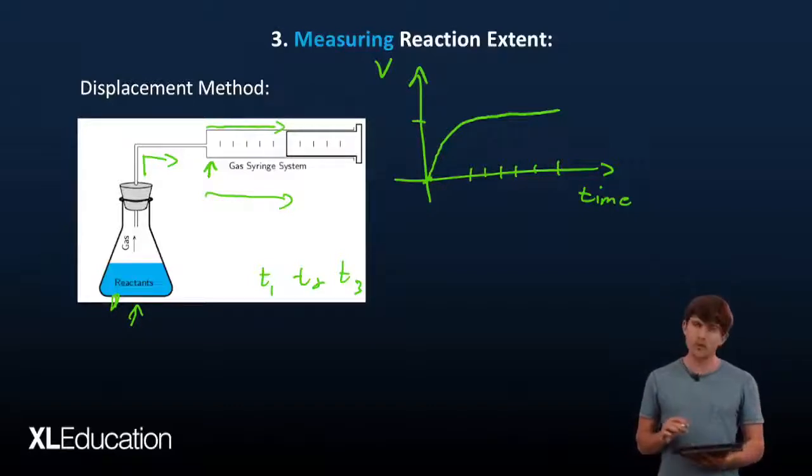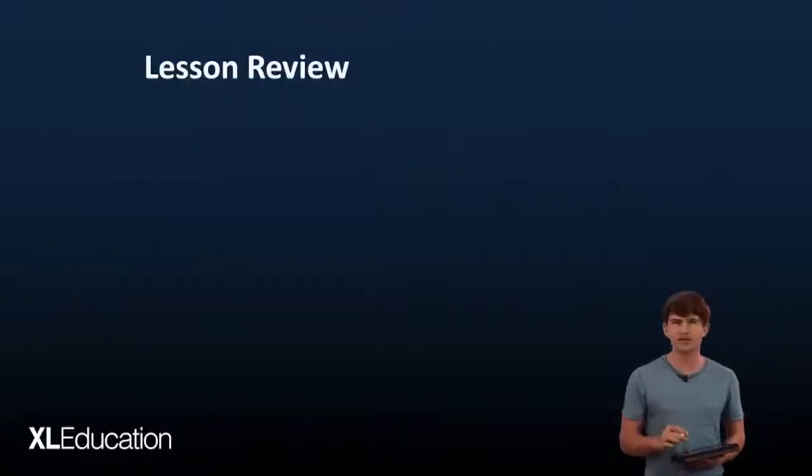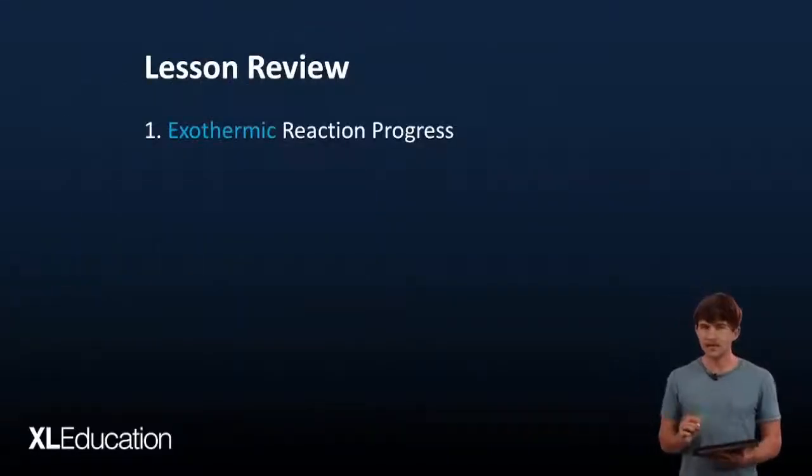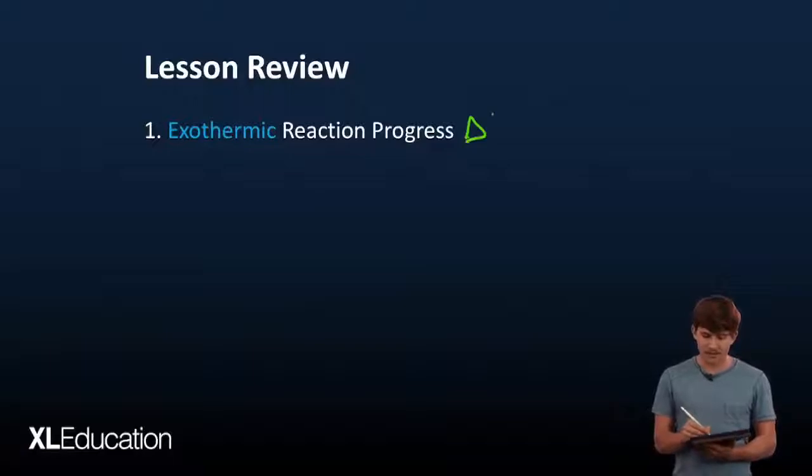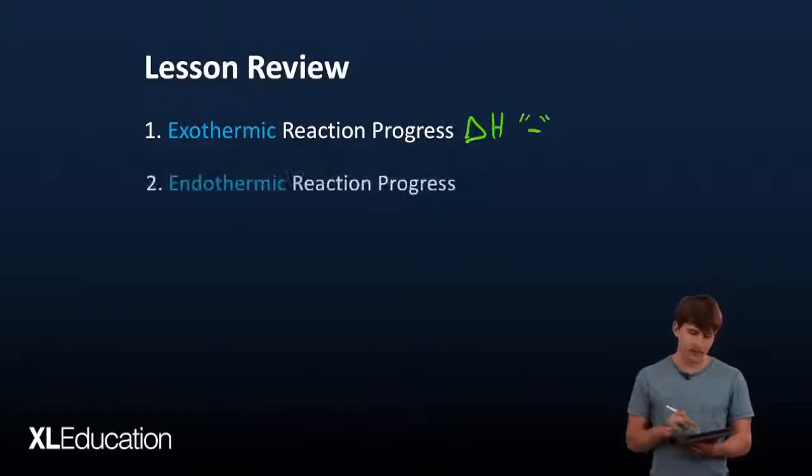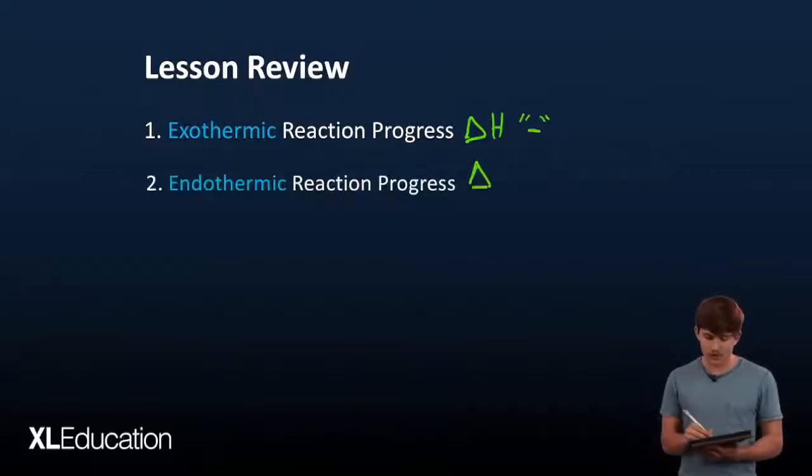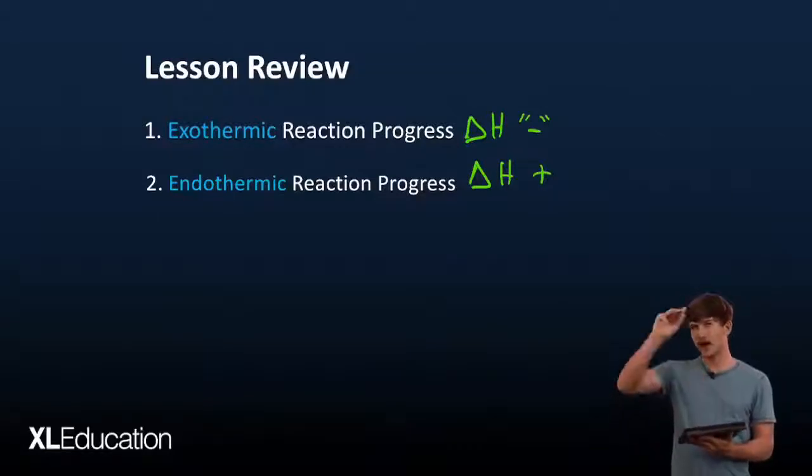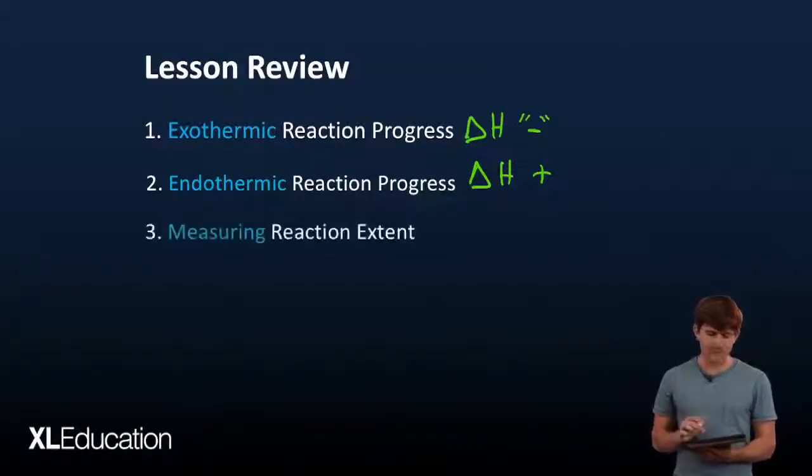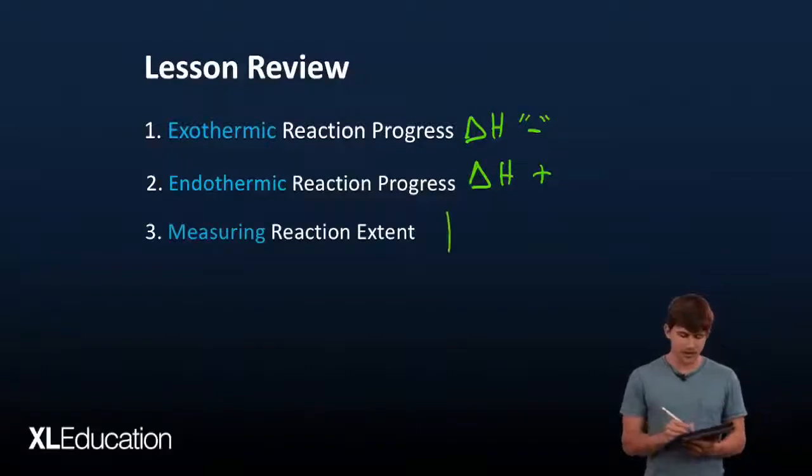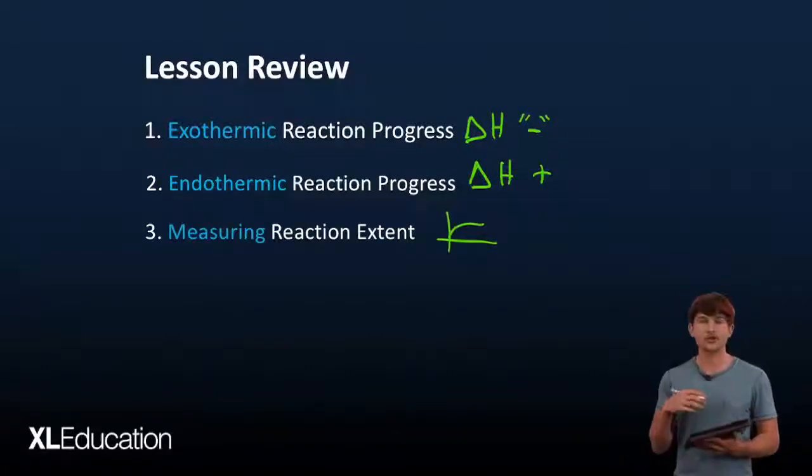Let's quickly review what we had to do today. The first thing we looked at was exothermic reactions - this is where the delta H, the enthalpy, is negative. The endothermic reaction is where our delta H is positive - products are going up, remember that up for endothermic. And then finally measuring reaction rates - this is how long it took to get the reaction to run its course. Good luck for your paper and I'll see you again soon.